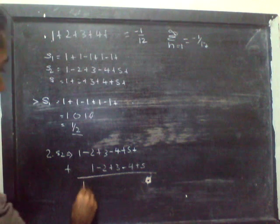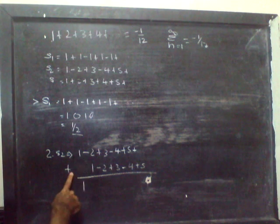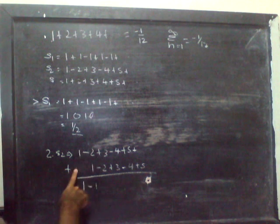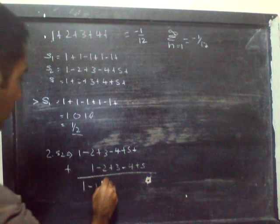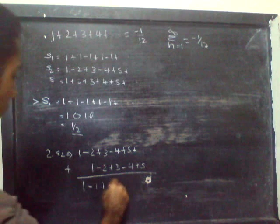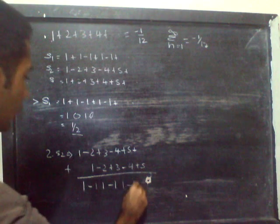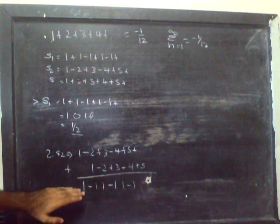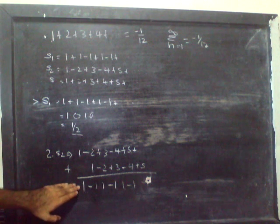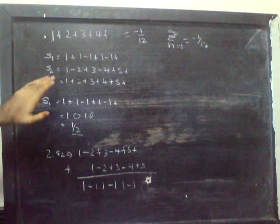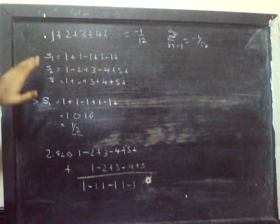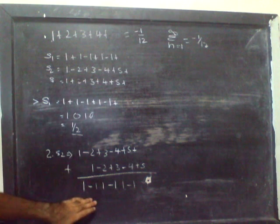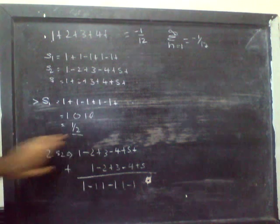So what do we get? 1 plus 0 makes it 1, minus 2 plus 1 makes it minus 1, plus 3 plus minus 2 makes it 1, and so on. So we get 1 minus 1 plus 1 minus 1. Now this is the exact equation, the exact sum that we have here, S1. So we know the answer. The answer to that is 1/2.